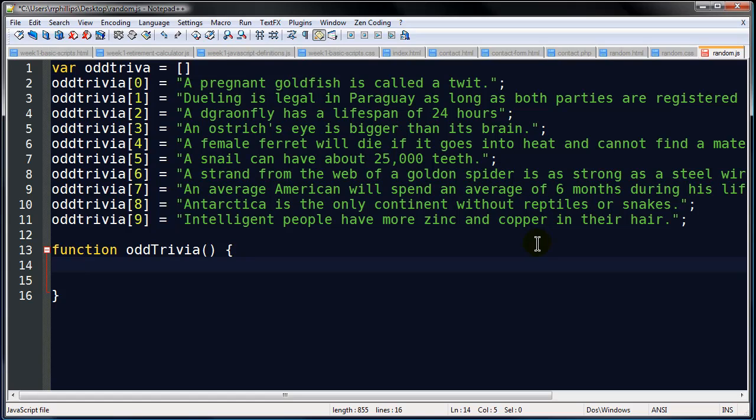So it's a really short little function. The first line of my function, or the first statement within my function, I'm going to create a variable called randomTrivia. And it's going to be equivalent to Math.floor of Math.random times oddtrivia.length.